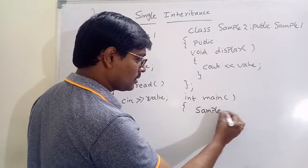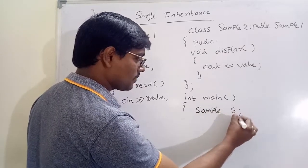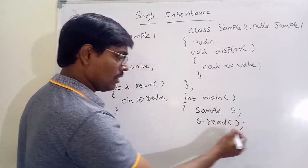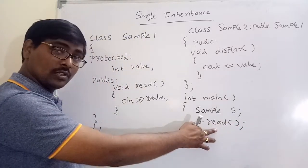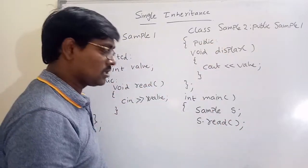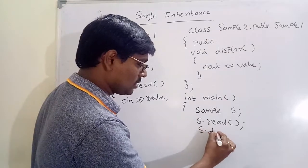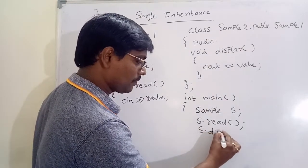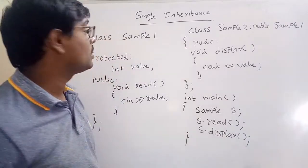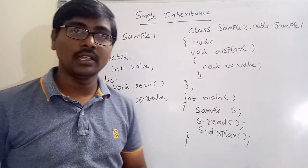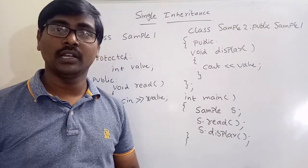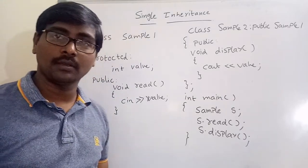So we create an object s of sample2. The parent class method read is available in the child class also: s.read(), and then s.display(). This is single inheritance — one parent class, one child class. Thank you.